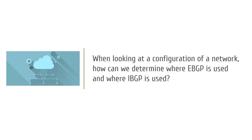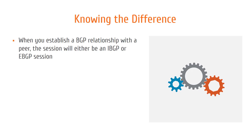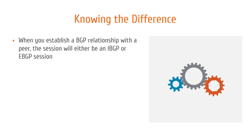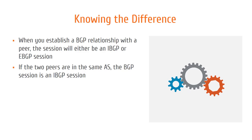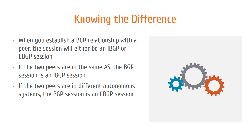As a point on configuration, while looking into the configuration of a network, how can you determine if eBGP or iBGP is used? The answer is when you establish a BGP relationship with a peer, the session will be either an iBGP or eBGP session. If the two peers are in the same autonomous system, the BGP session will be an iBGP, or interior border gateway protocol, session. If the two peers are in different autonomous systems, the BGP session is an eBGP session. If you think about it in terms of 'i' being interior and 'e' being exterior, then it becomes self-explanatory and easy to remember.